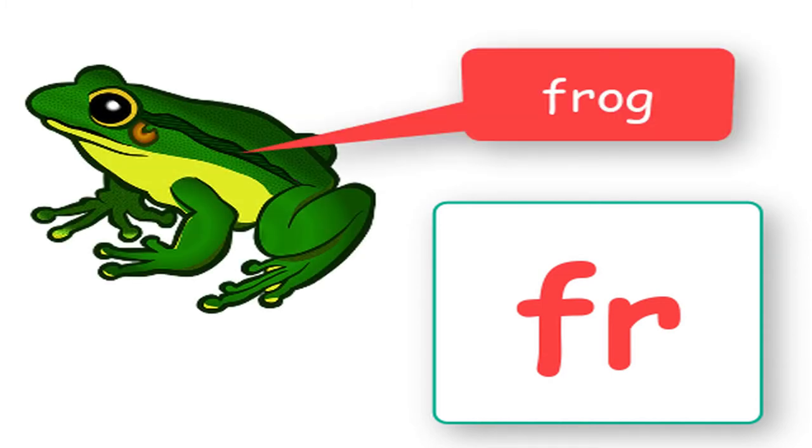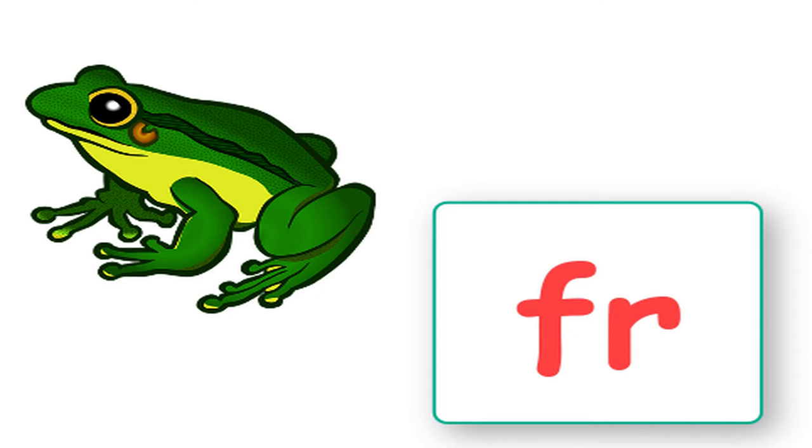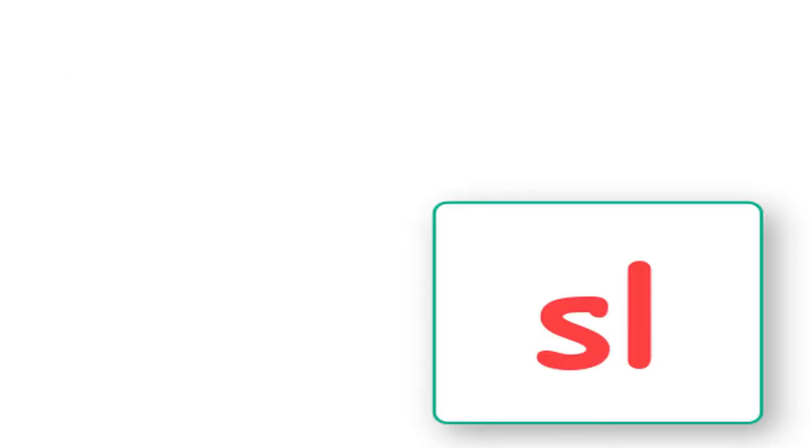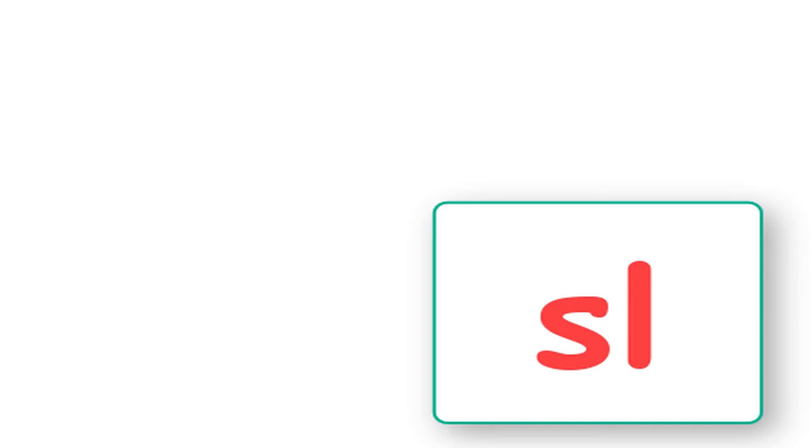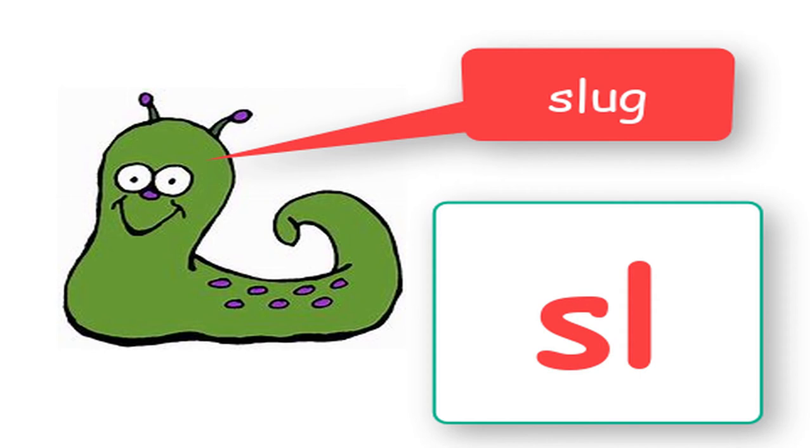Fr says ferr, ferr. And our word is ferret, ferret. Two more letters. This time S and L. So our sound is sl, sl. And our animal is a slug. Slug.